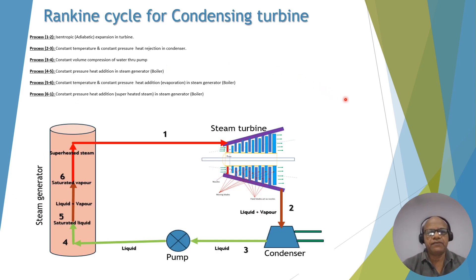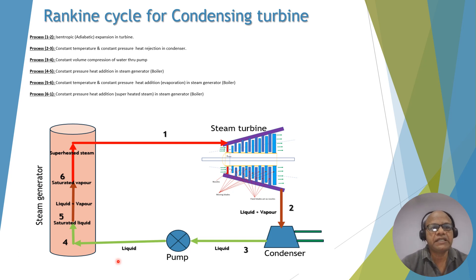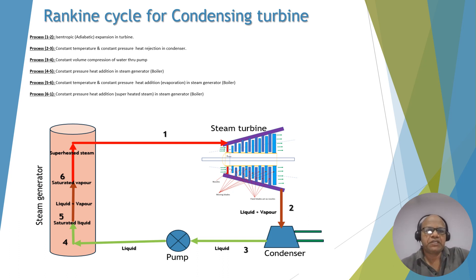This is the Rankine cycle for a condensing type steam turbine. Process 1 to 2 is isentropic expansion in the steam turbine. 2 to 3 is condensation at constant temperature and constant pressure. 3 to 4 is a constant volume pressure rise of the water by the feed water pump. 4 to 5 is constant pressure heat addition in the boiler. 5 to 6 is constant temperature and constant pressure heat addition — that is evaporation in the boiler. And 6 to 1 is constant pressure heat addition, which is superheated steam in the boiler. These are the typical processes for the Rankine cycle in a power plant.